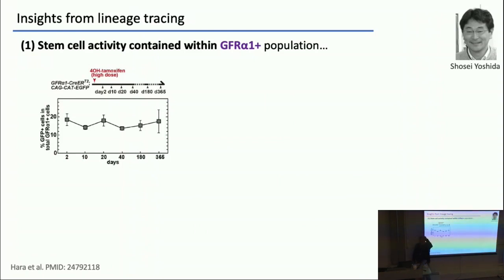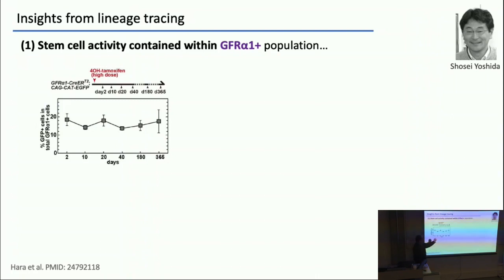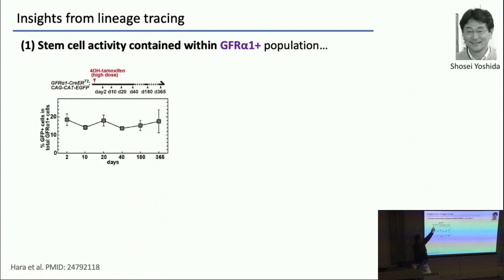Enter Shose Yoshida, who has been a collaborator for more than 12 years. What Shose's postdoc Kinshiro Hara did was first to label the GFRA1-positive population at high density — here's a genetic labeling system where you turn on GFP, and at day zero he's labeling around 20% of cells in the GFRA1 population. After one year, you've still got 20% of labeled cells. That means you've labeled the renewing population.